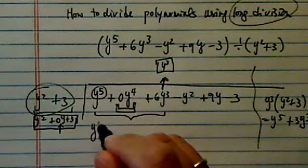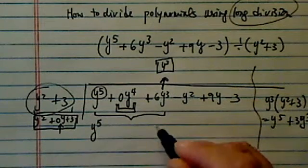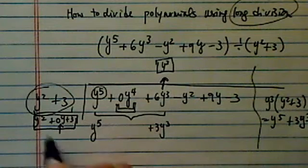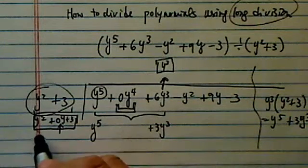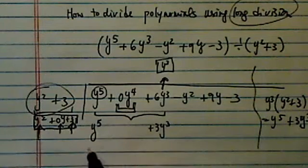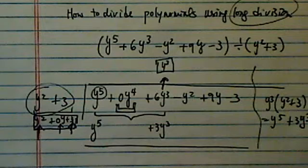So let's write it up. Y to the fifth. Now be careful with where you line it up. It's 3y to the cube over here. The reason we have to leave this spot here is because 1, 2, and 3, we have three terms. So each time we're going to take care of three terms.